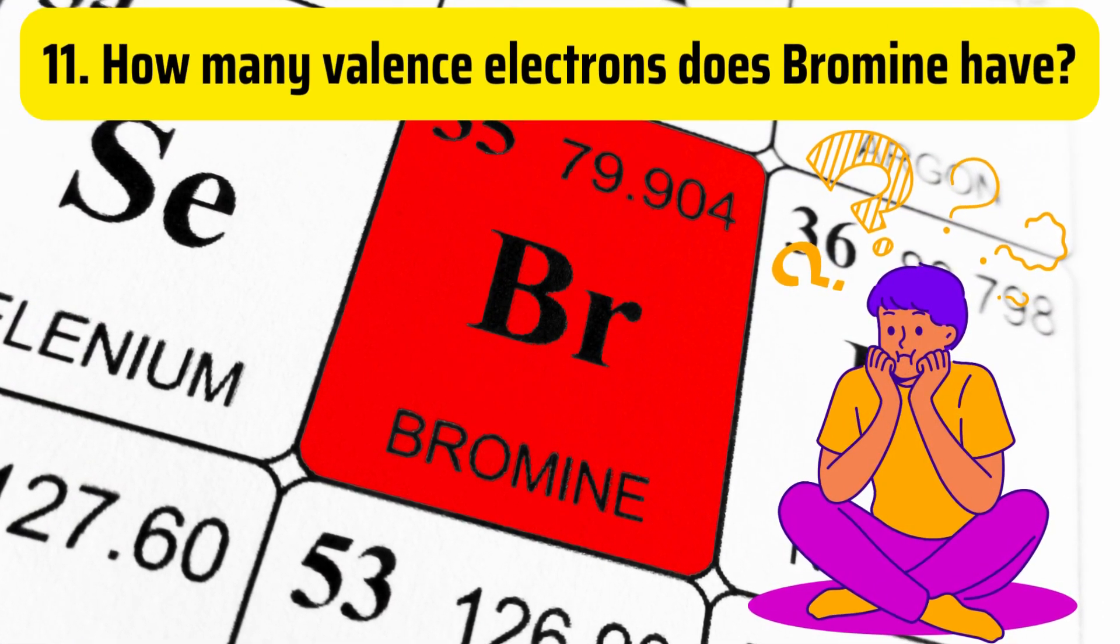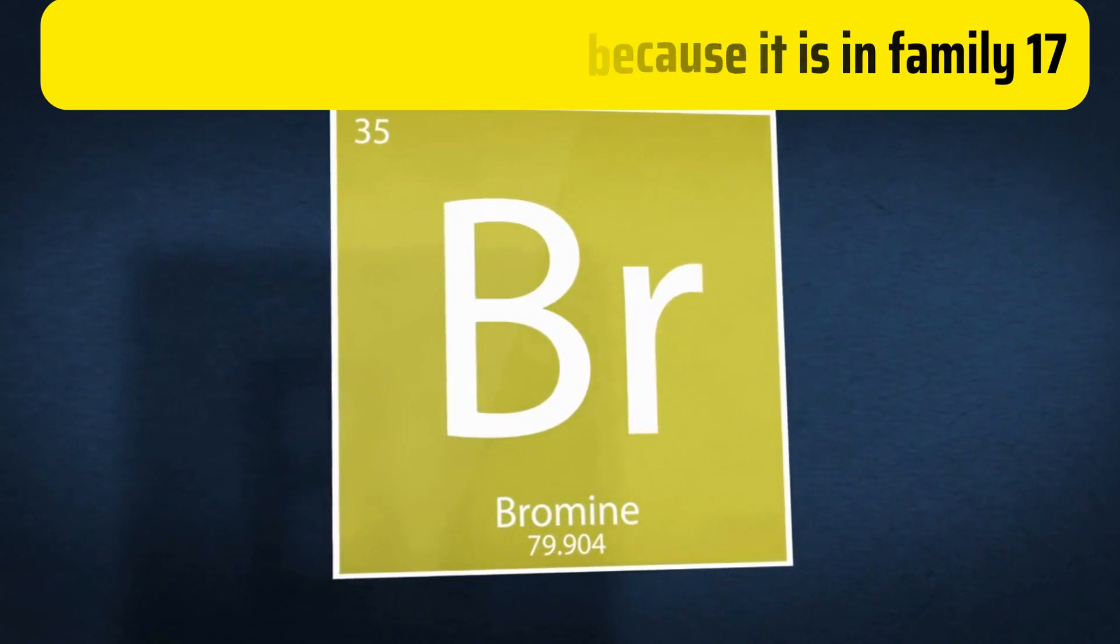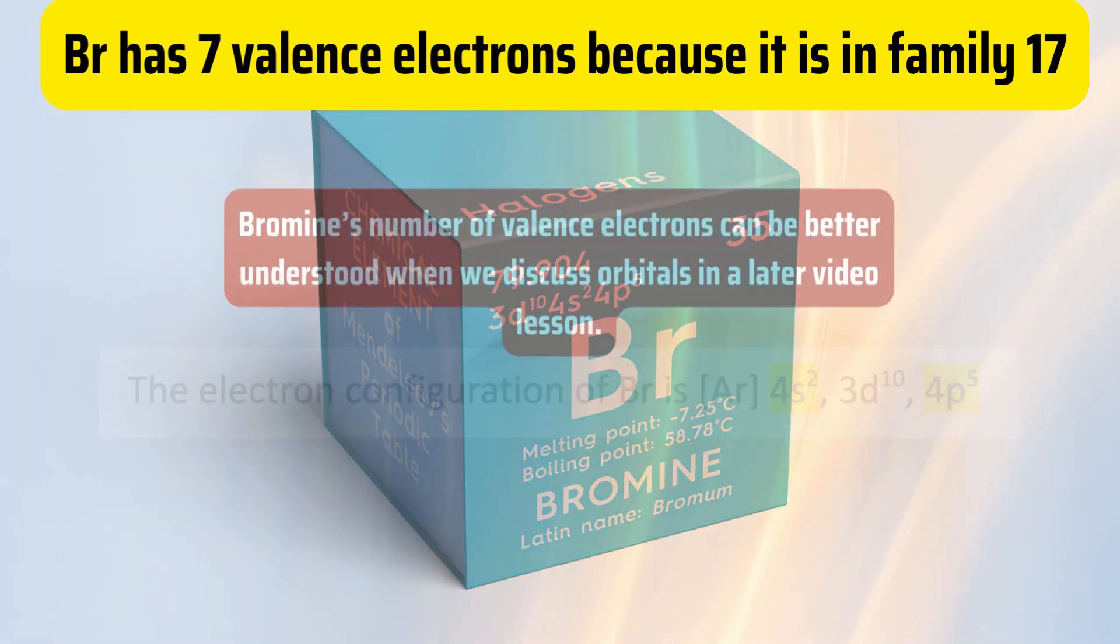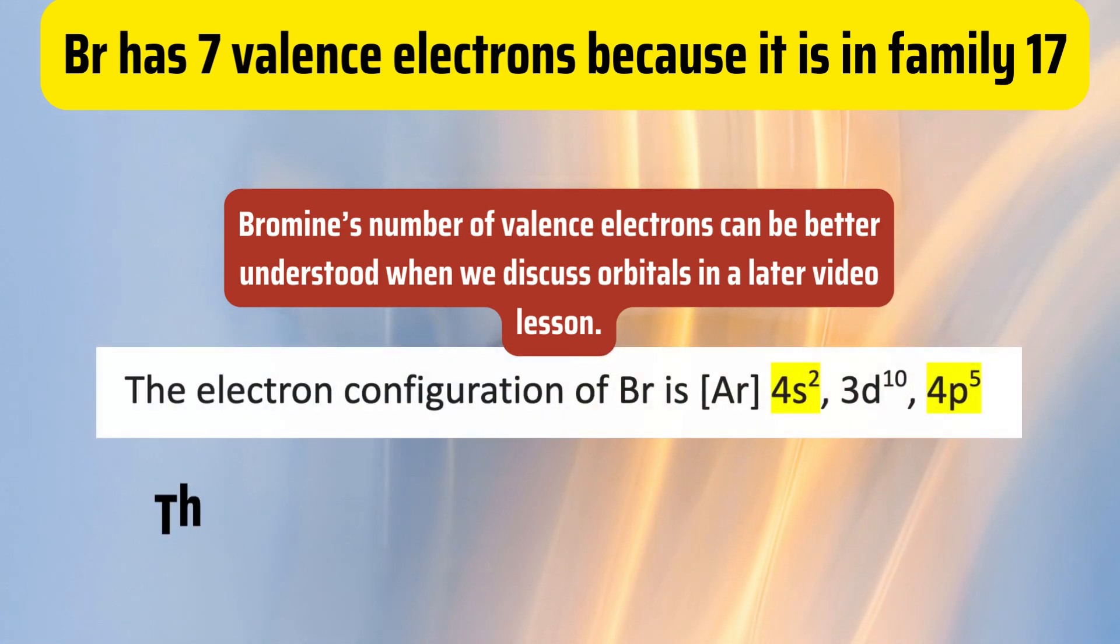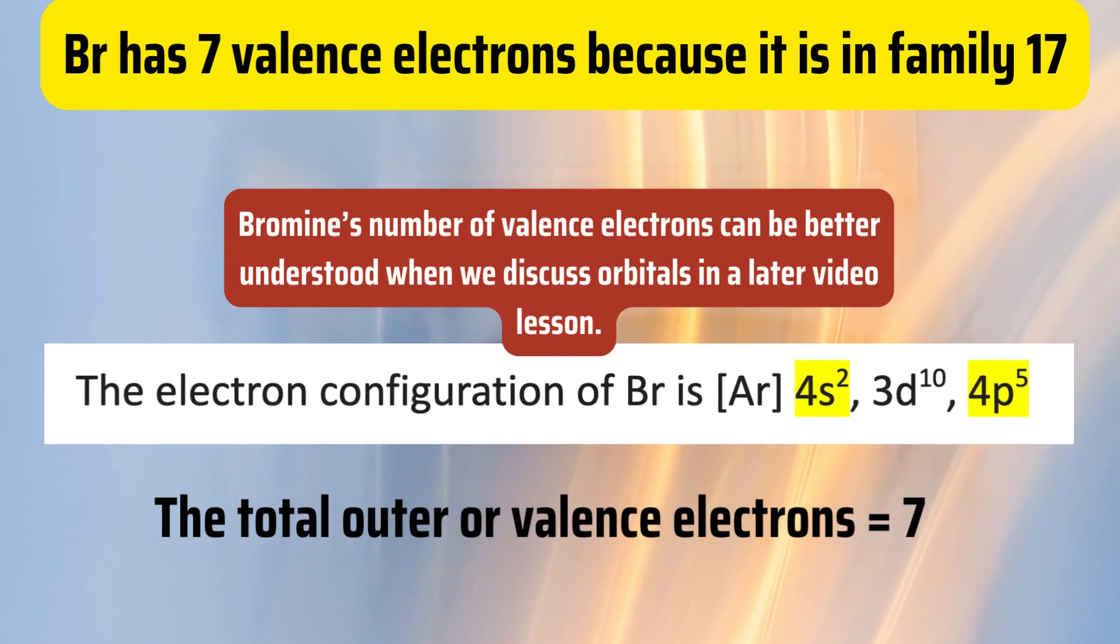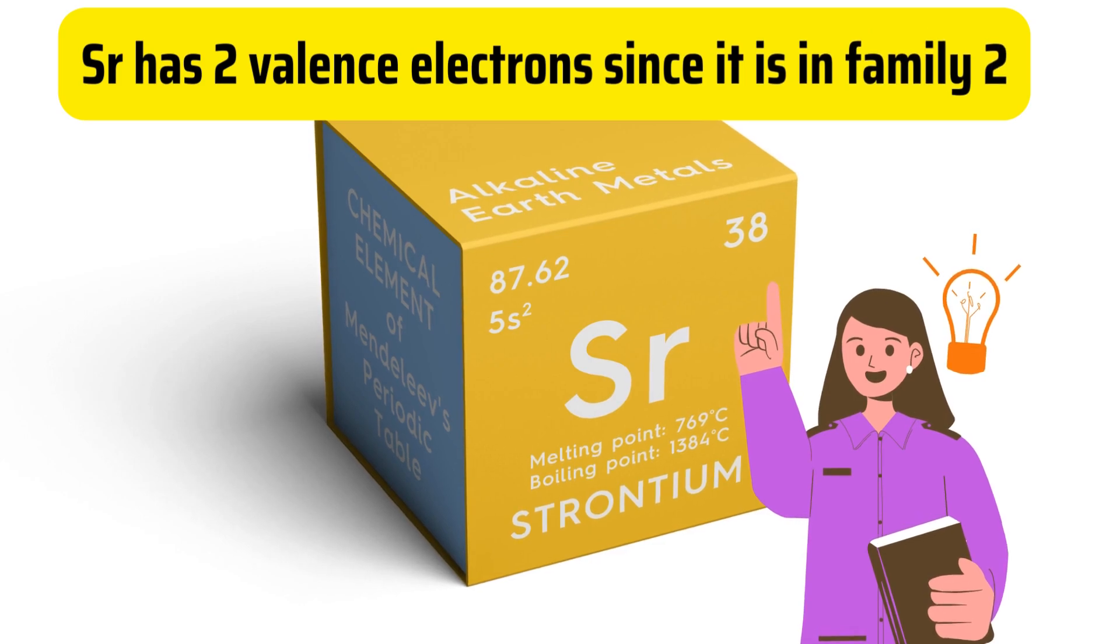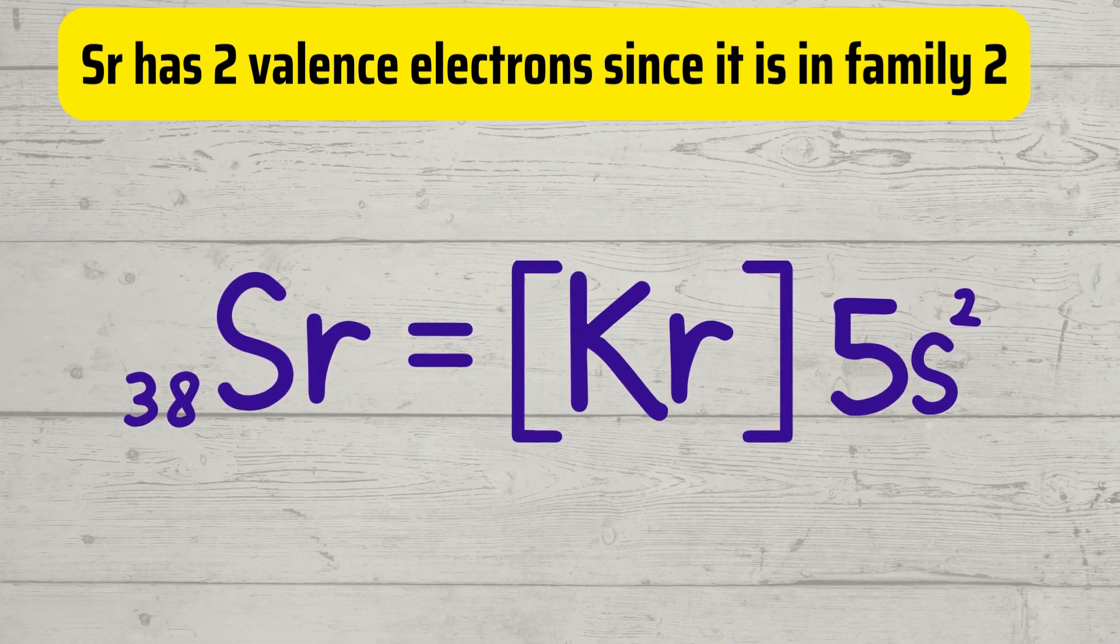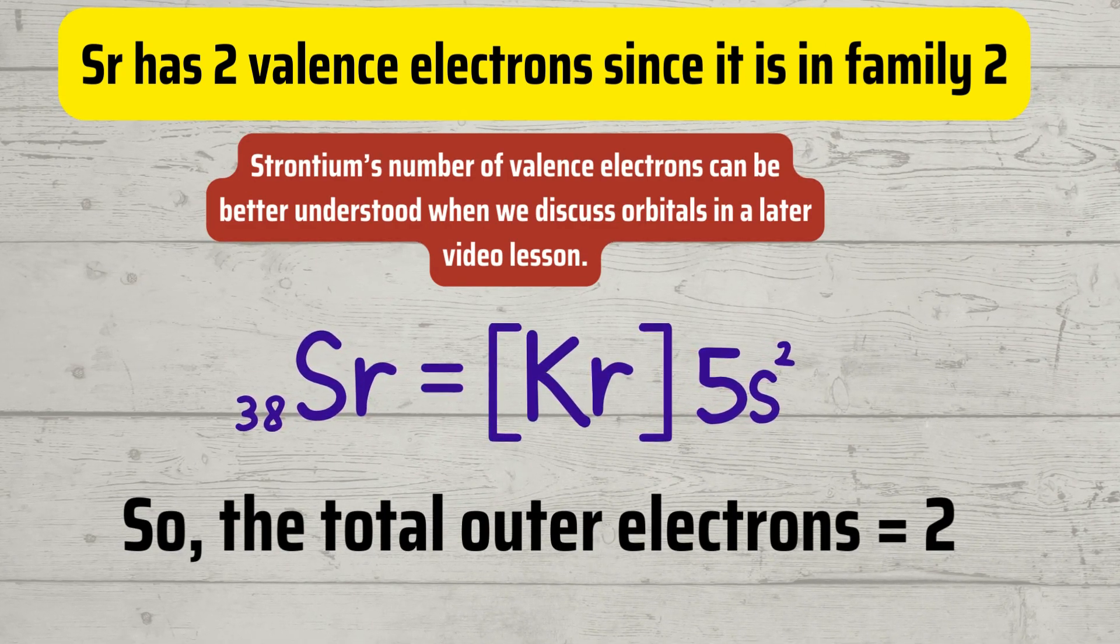Number 11. How many valence electrons does bromine have? Bromine has 7 valence electrons because it is in family 17. Bromine's number of valence electrons can be better understood when we discuss orbitals in a later video lesson. The electron configuration of bromine is argon, 4s2, 3d10, 4p5. And if you add the 4s2 and the 4p5, those electrons, the total number of outer electrons or valence electrons equals 7 for bromine. Number 12. How many valence electrons does strontium have? Strontium has 2 valence electrons since it is in family 2. The electron configuration of strontium is krypton 5s2. So, the total outer electrons for strontium is 2 electrons, which is its valence electrons.